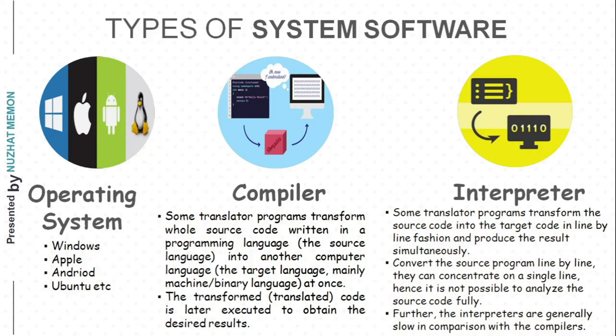The third type of system software is the interpreter. The interpreter is slightly different from the compiler. It translates the source code into the target code in a line-by-line fashion and produces results simultaneously. Since it converts source code line by line, it is not possible to analyze the source code fully, and interpreters are generally slower in comparison with compilers, which transform the whole source code at once.